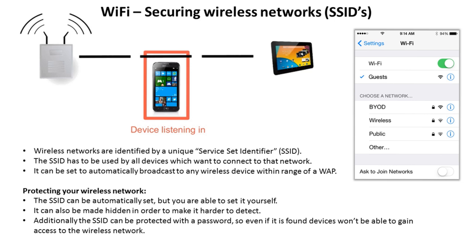It's very important that wireless networks are secure, and for this we use a number of features, including something important known as the SSID. Wireless networks are identified by their unique Service Set Identifier, or SSID. It's this SSID which is used by devices that want to connect to a wireless network — when you look on a smartphone you'll see the list of SSIDs available. The SSID can be set to broadcast automatically to any wireless device within range of the wireless access point.